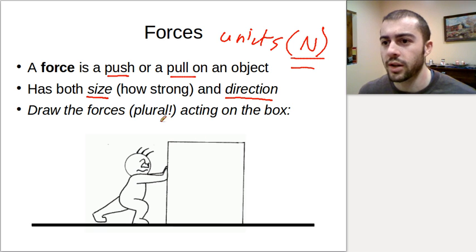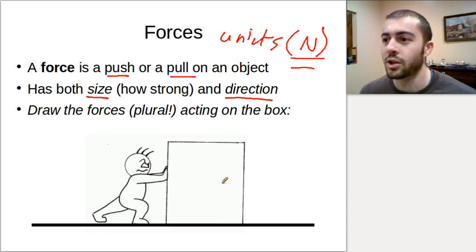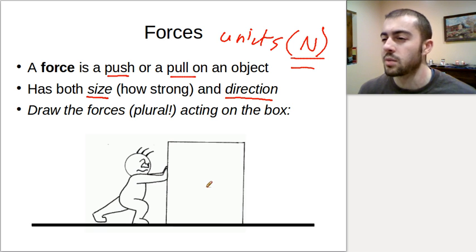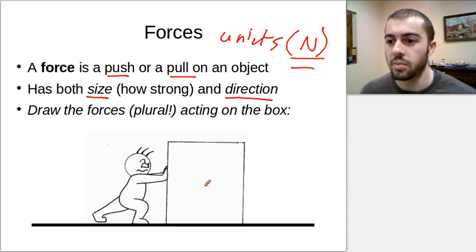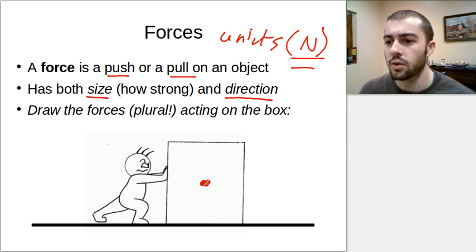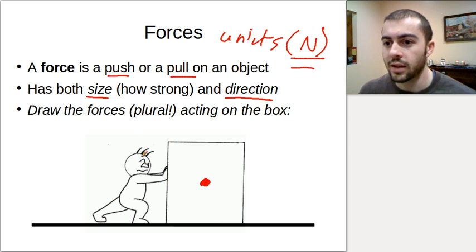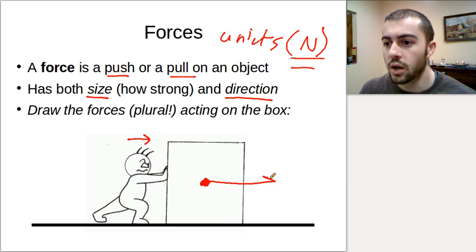So let's think about these. If we're trying to draw all the forces acting on this box here, there's more than just the guy pushing on it. If you want to pause the video right now and think about what other forces might be acting on this box - what else might be pushing or pulling on it as he pushes it across the floor. So we can draw what's called a free body diagram or a force diagram of all the forces on this box. If we draw a dot in the middle, we can draw all the forces acting on the box. So obviously we've got this guy here - he's pushing to the right on the box, so we could draw one force going this way, and this would be the force from the guy on the box.